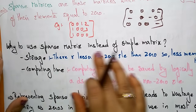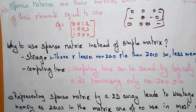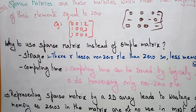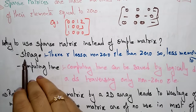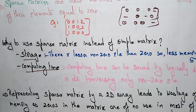So why use a sparse matrix instead of a simple matrix? The system or the memory can store data using a simple matrix. Then why go for a sparse matrix? Because the main things are storage and computing time.